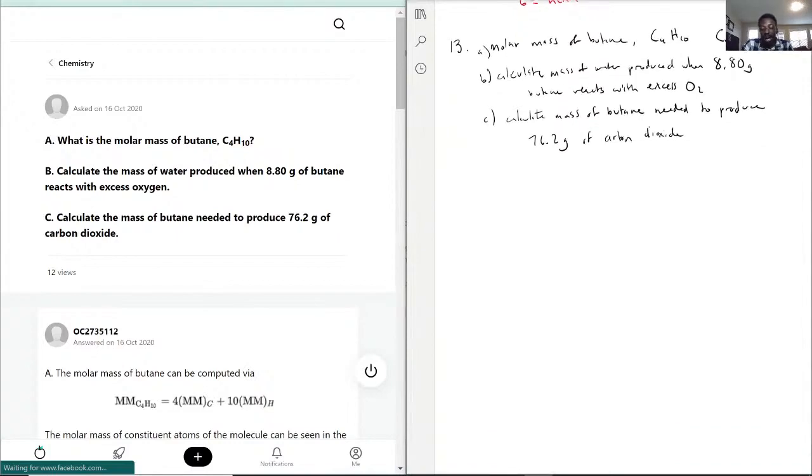Okay so with that being said let's first find out the molar mass of butane. So with that being said, we have four carbons and we have 10 hydrogens. Carbon is 12.011 and hydrogen 1.008.